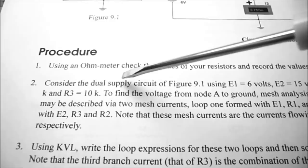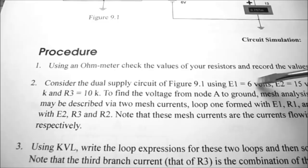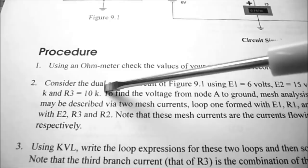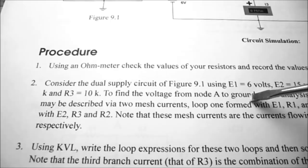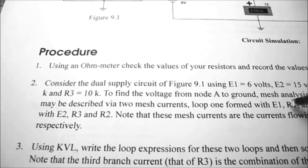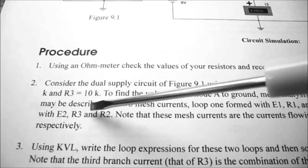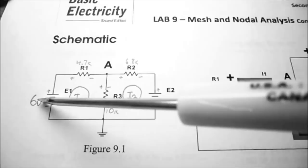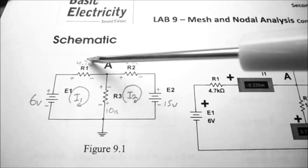Under procedure step number two, we're to consider the dual supply circuit of figure 9.1 using E1 equal to 6 volts, E2 equal to 15 volts, R1 is 4.7K, R2 is 6.8K, and R3 is 10K. It says to find the voltage from node A to ground, mesh analysis may be used. This circuit may be described via two mesh currents: loop one formed with E1, R1, and R3, and loop two formed with E2, R3, and R2. Note that these mesh currents are the currents flowing through R1 and R2 respectively.